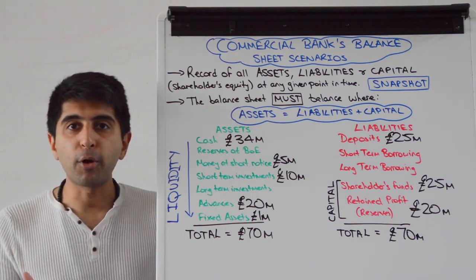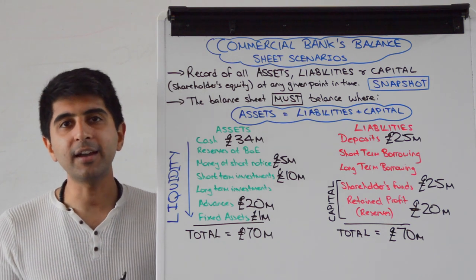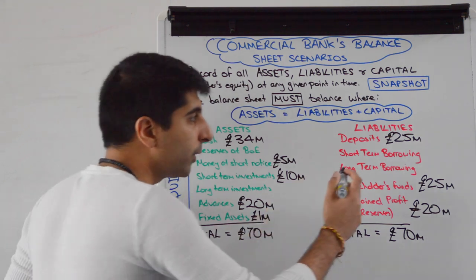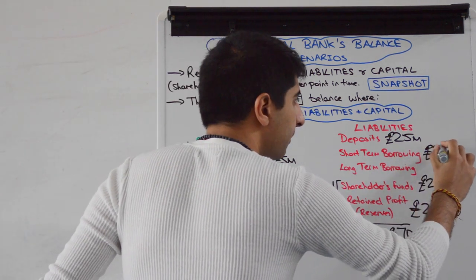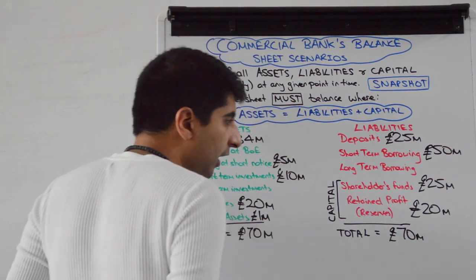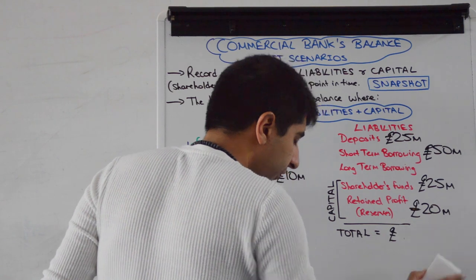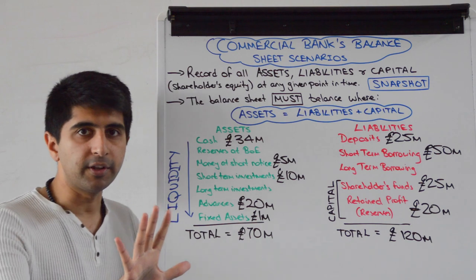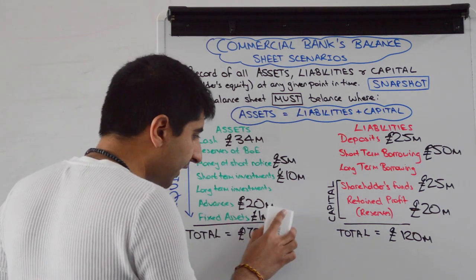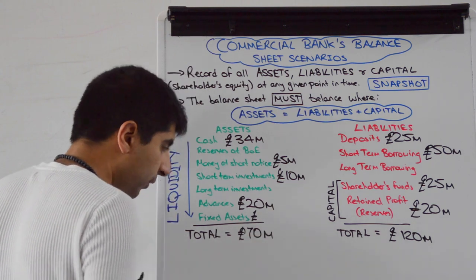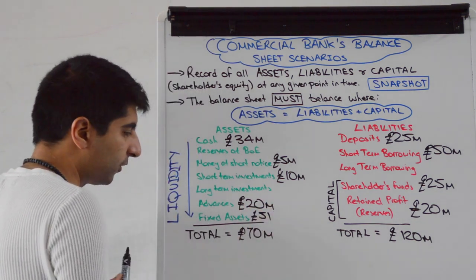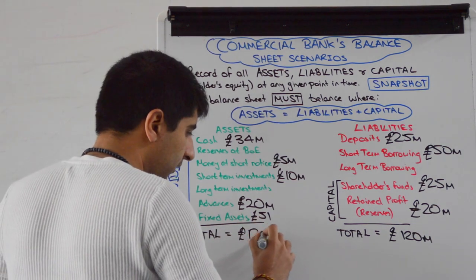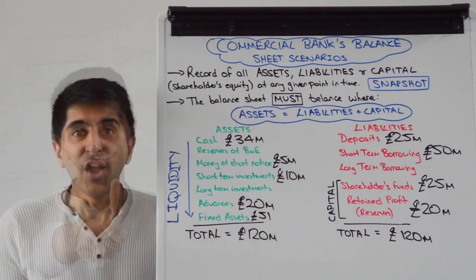Let's say the bank borrows 50 million pounds from the money markets and decides to buy five buildings with a total value of 50 million pounds. The 50 million pounds of borrowing in the money markets is recorded as short-term borrowing, increasing total liabilities from 70 million to 120 million pounds. Buying five buildings increases fixed assets from 1 million to 51 million pounds, which increases total assets from 70 million to 120 million pounds. We have a balanced balance sheet.